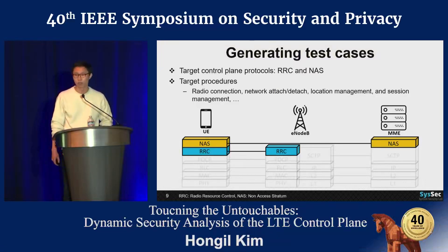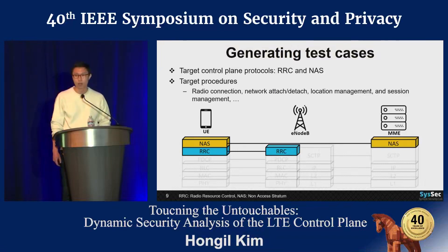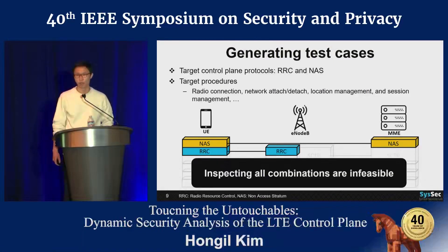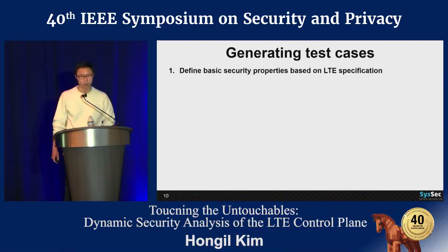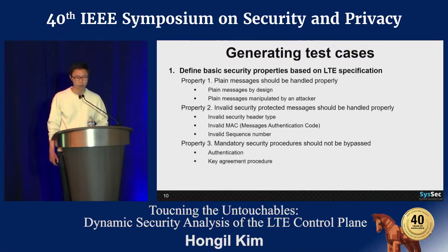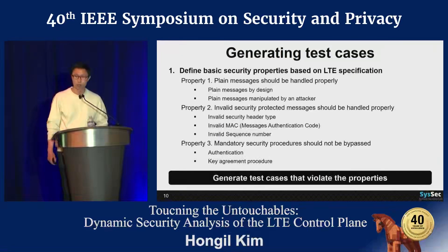The simplest way to test these two protocols is to test all possibilities, all procedures, message types, message variations, and options. However, inspecting all those combinations is infeasible in practice. So we narrowed down the scope by defining basic security properties based on LTE specifications. We defined three security properties and generated test cases that violate these properties.